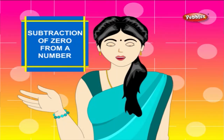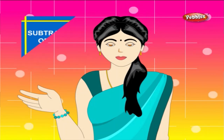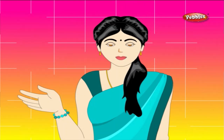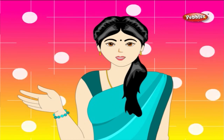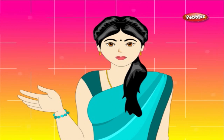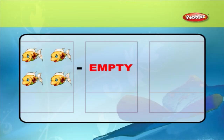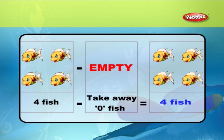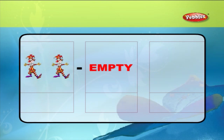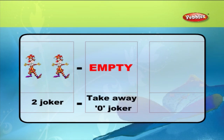Subtraction of zero from a number. Zero means nothing. When you take away zero from any number, it does not change the value of that number. For example, four fishes minus zero fish is equal to four fishes. Two jokers minus zero jokers is equal to two jokers.